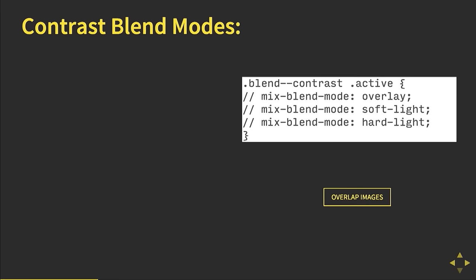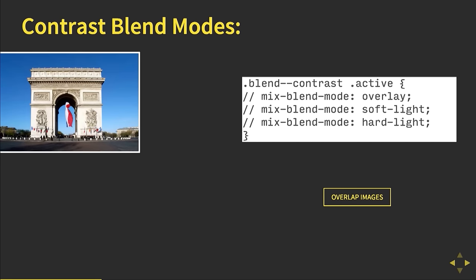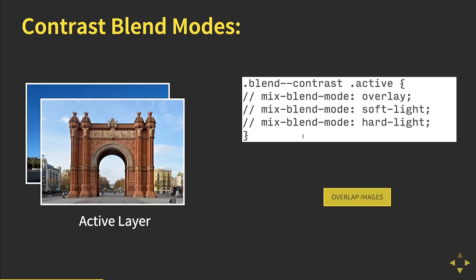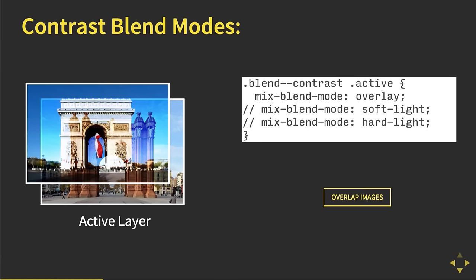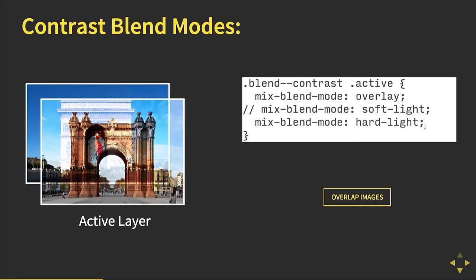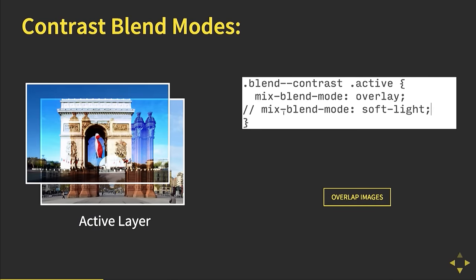For contrast blend modes, we'll use the Arc de Triomphe from Paris and the one in Spain and overlap those. These are really interesting because everything in the contrast blend mode group uses a combination of other blend modes. Overlay takes multiply and screen at half strength and bases it on the backdrop. Hard light does the same thing but takes the foreground layer. Soft light uses both the darken and lighten blend modes instead of multiply and screen.